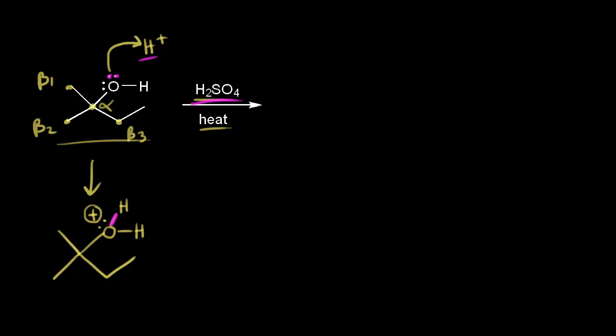That gives us water as a leaving group. We know water is a good leaving group — the electrons in this bond come off onto the oxygen to form H2O. When that happens, we take a bond away from this carbon in red, and we're going to form a carbocation. The carbon in red would have a plus one formal charge. This is a tertiary carbocation because the carbon in red is directly bonded to three other carbons, so this is a stable carbocation.